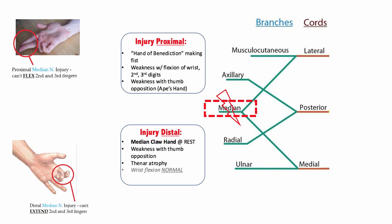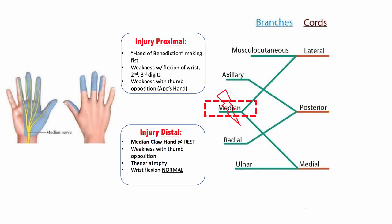You may also see thenar atrophy in distal median nerve injuries. Median nerve injuries will classically result in sensory loss to the palmar aspect and the superior dorsal aspect of the lateral 3.5 digits and the thenar eminence in the hand, as seen in the distribution above. The median nerve provides no sensory innervation to the upper arm or forearm, just the hand.